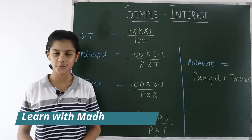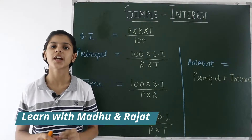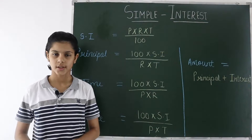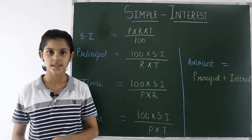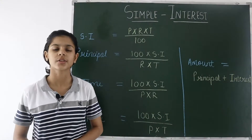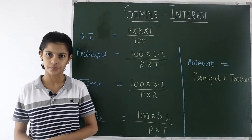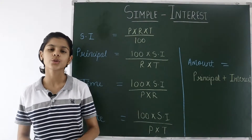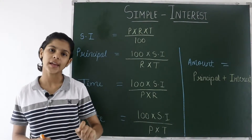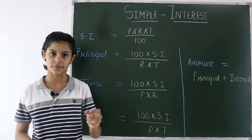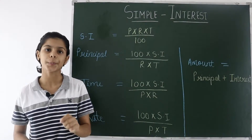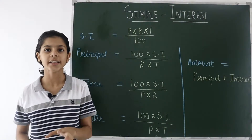Hi friends, I'm Madhu. In this video we are going to talk about the chapter Simple Interest. There are two types of interest: simple interest and compound interest. About compound interest we will talk in another video. When we go to the bank for taking a loan or for investing money, we have to pay some interest. If we are borrowing money, we have to pay interest on that, and that interest can be simple as well as compound.